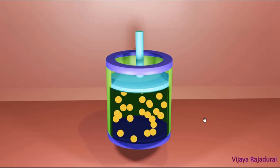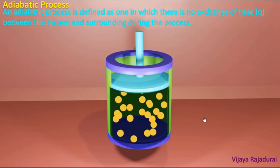In this video we are going to discuss about one of the important thermodynamic processes called an adiabatic process. An adiabatic process is defined as one in which there is no exchange of heat between the system and the surrounding. To explain this, let us consider a cylinder which contains n number of gas molecules, fitted with a frictionless piston. This cylinder is made up of non-conducting material, meaning it cannot transfer heat between the surrounding and the system. Here the system is the n number of gas molecules.